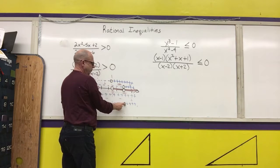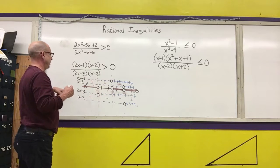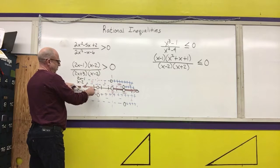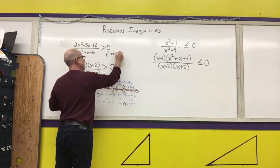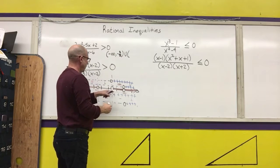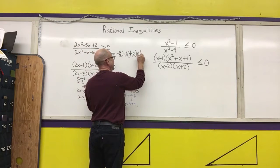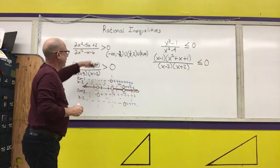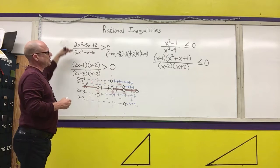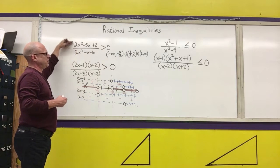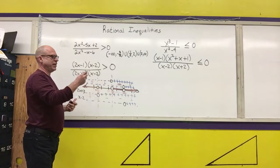I won't shade this point in either because it would be undefined. So I now have various regions and I want to write my final answer in interval form. I can go from negative infinity to negative three-halves, not touching either endpoint, union with one-half to two, union with two to infinity. Everywhere in these three intervals the graph of this rational function is positive. Solving the rational inequality for x greater than zero tells you when it's positive, which helps you determine whether the graph is above or below the x-axis.